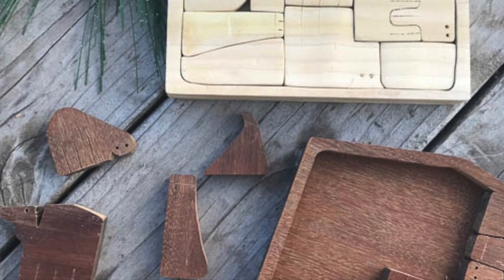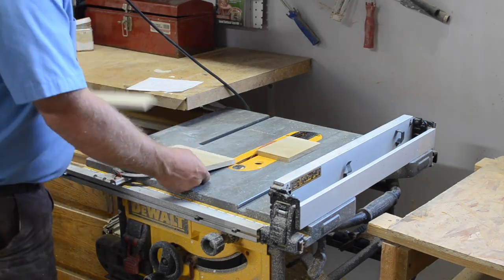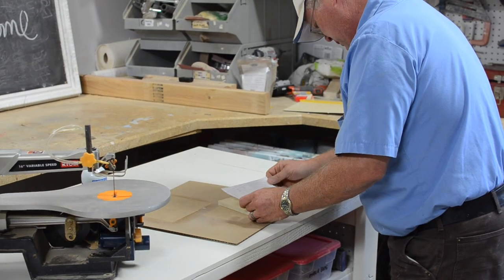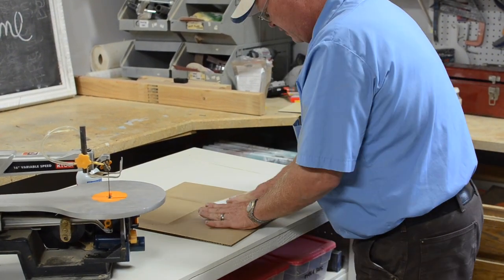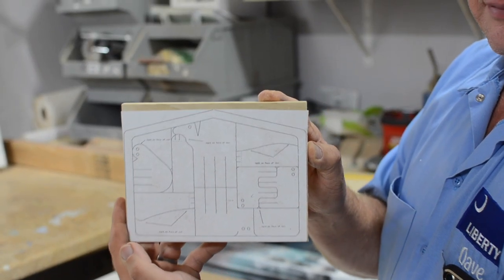Let's make a nativity puzzle. To start, Dave from Liberty Homes first started by cutting the poplar down to size, and then he used a spray adhesive to stick the pattern onto the wood so it wouldn't slide around while we were cutting it out.